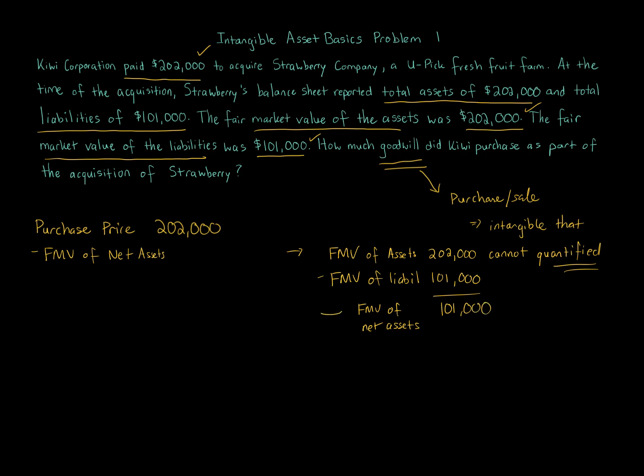We now can use this amount, this $101,000 and subtract it away from the purchase price, the $202,000, because the fair market value of the net assets, these have been adjusted for liabilities. So this is saying, assuming there were no liabilities, this is what the fair market value of the assets would be. Obviously there are, but you're taking into account the liabilities. So this $101,000 difference is what cannot be accounted for, cannot be quantified. So this $101,000 is the amount that will go to Goodwill when Kiwi purchases the business.